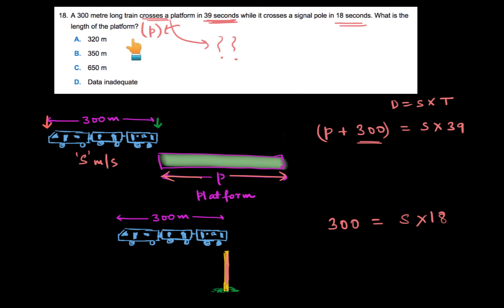Now, we need to find the value of P, what is the length of the platform? We have two equations, two unknowns P and s. And now let's see how we can find the value.